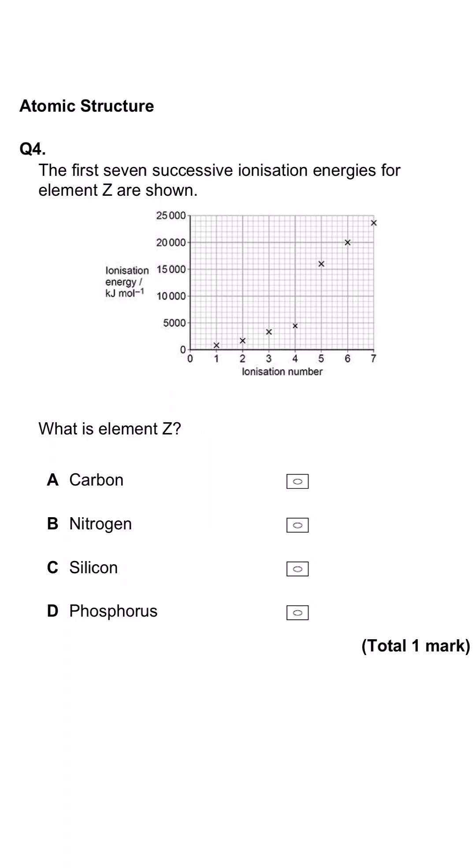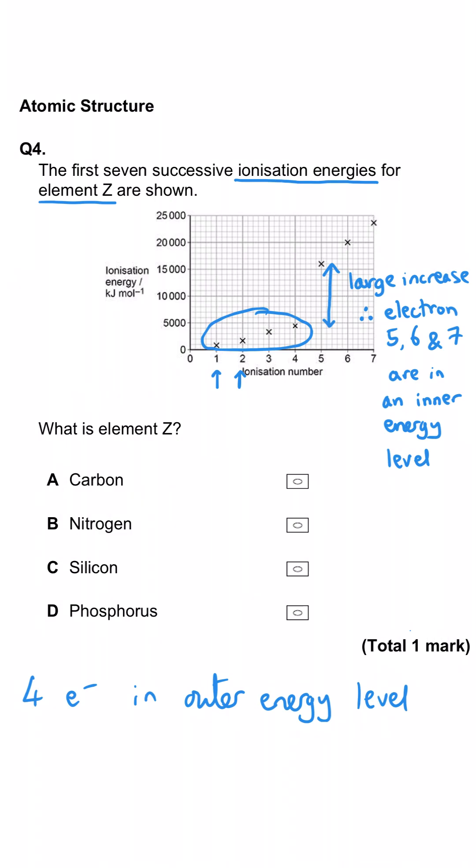This question is about ionization energies and we're shown successive ionization energies for element Z. This is the first ionization energy, the second ionization energy a bit bigger, then the third, then the fourth. Then we have a huge leap up to the fifth ionization energy. That means we have gone in an energy level. And because of that, we know that there are four electrons in the outer energy level that were similarly easy to remove. Four outer energy level electrons means that we're looking for something in group four.